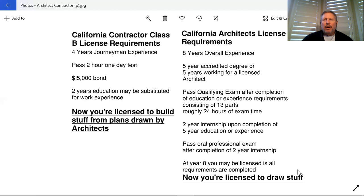When you're a contractor, it takes about four years of journeyman experience and you take basically one test. After you complete that, now you're licensed to build stuff from plans drawn by architects.